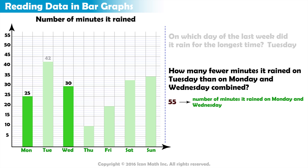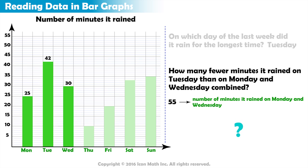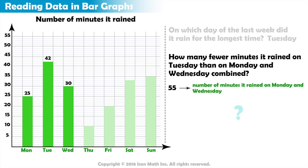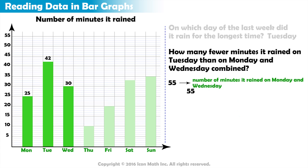Since 55 is greater than 42, we know it rained for fewer minutes on Tuesday than on Monday and Wednesday combined. But how many fewer minutes? To find out, we calculate the difference in time between 55 and 42.